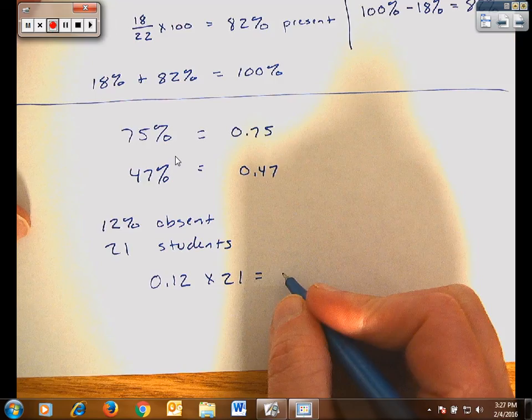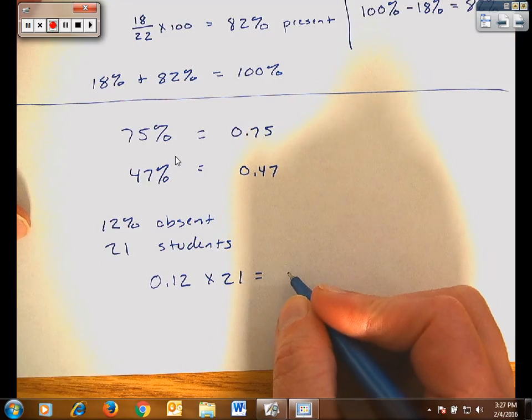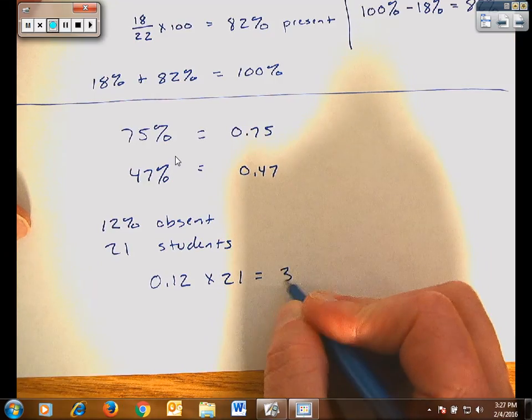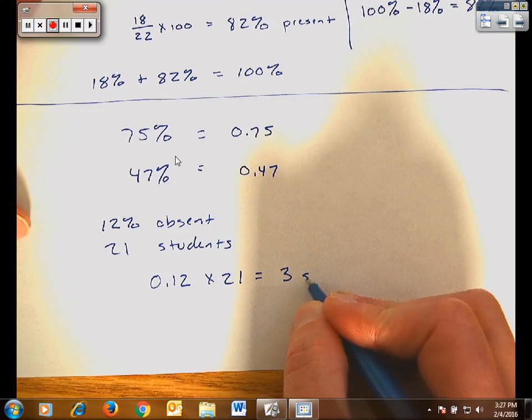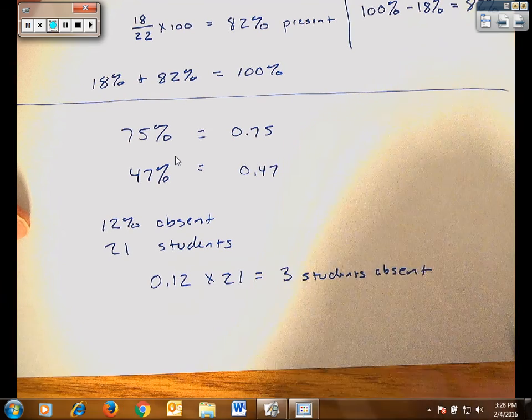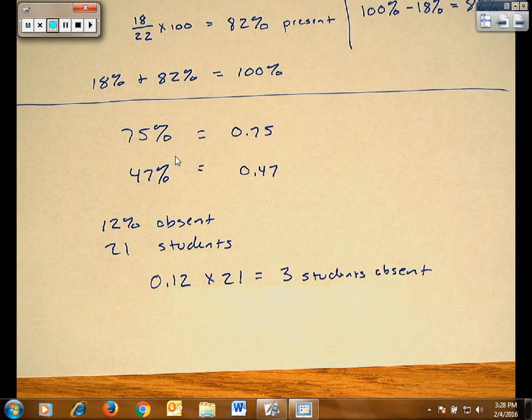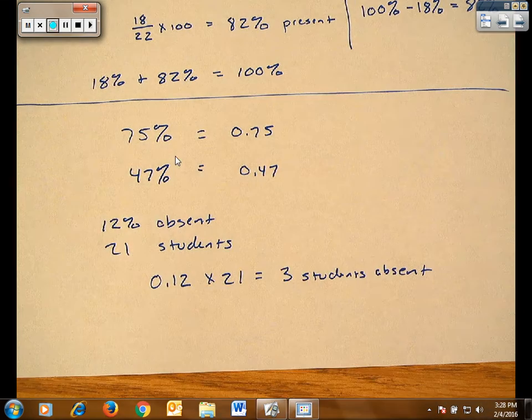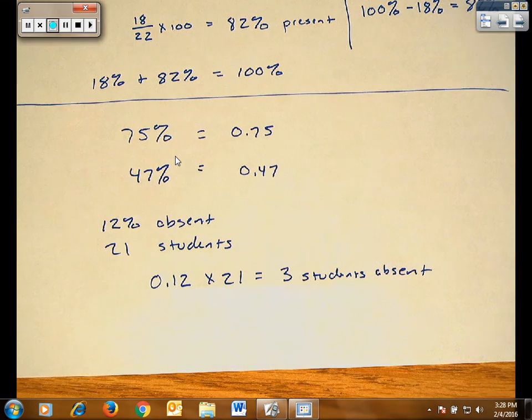Rounding it to a whole number, the calculator says 2.52. Rounding that to a whole number, I had three students absent. Now, why would I round it to a whole number? Well, I can't have half a student. So I have to have my students in whole numbers. Three students would have been absent.